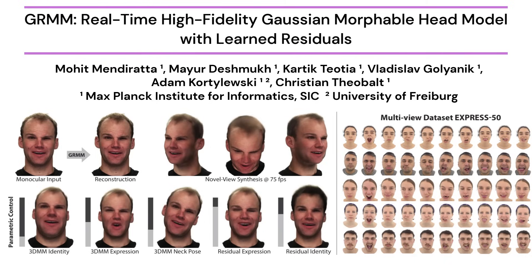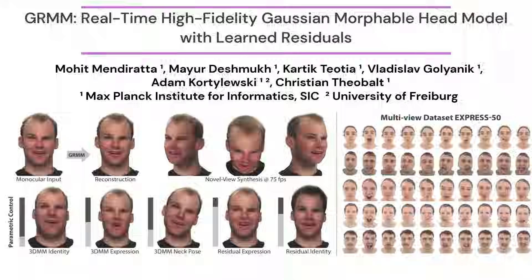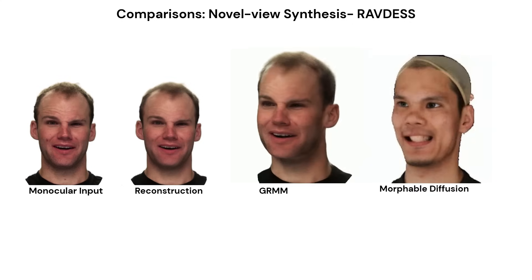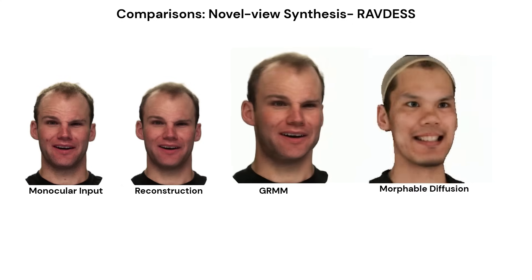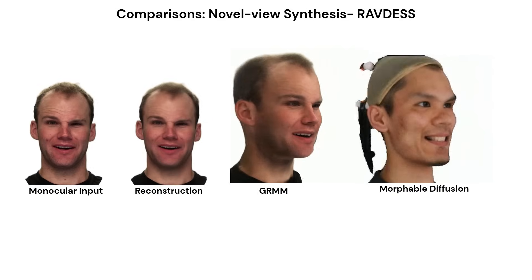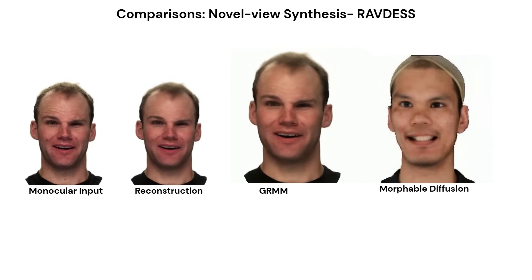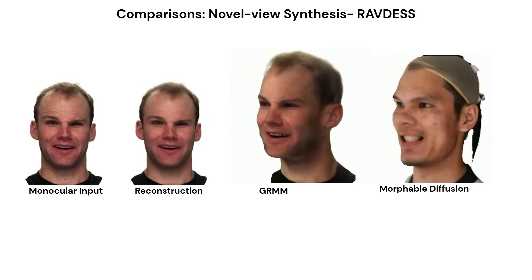we achieve photorealistic novel-view synthesis and disentangled interactive control in real-time. Let's start with novel-view synthesis on the monocular RAVDIS dataset. From a single image, our method reconstructs the subject and renders new viewpoints while keeping identity and expression intact. Side-by-side with morphable diffusion, you'll notice sharper details and stronger consistency across view directions.